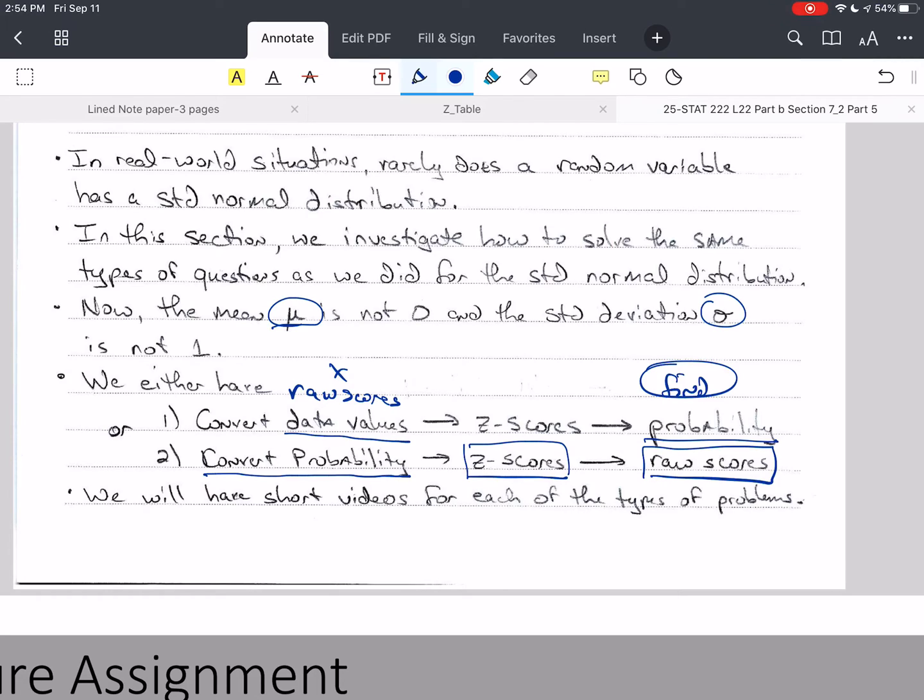So we're going to have short videos for each of the type of problems, and there will be six types of problems that you can solve this way. We've gone over those six problems in 7.2. We're just going to now add some extra steps before we're able to solve the problem. So we're going to do the same thing, but now it's going to take an extra step or two to get to the answer.